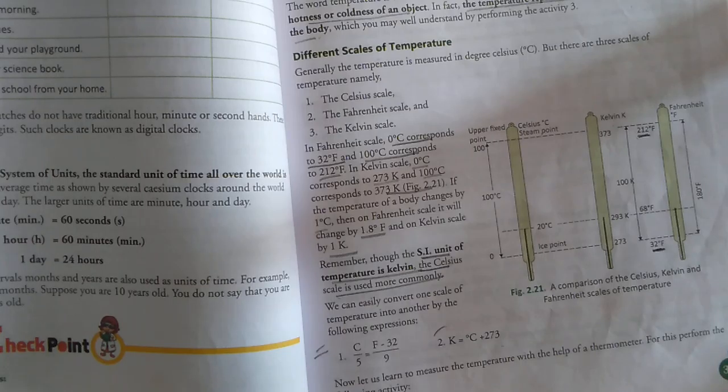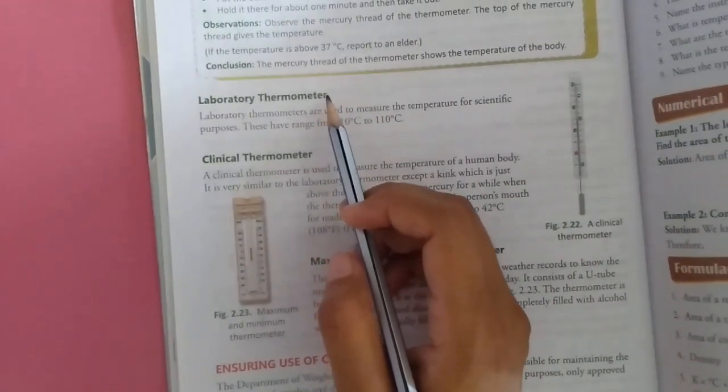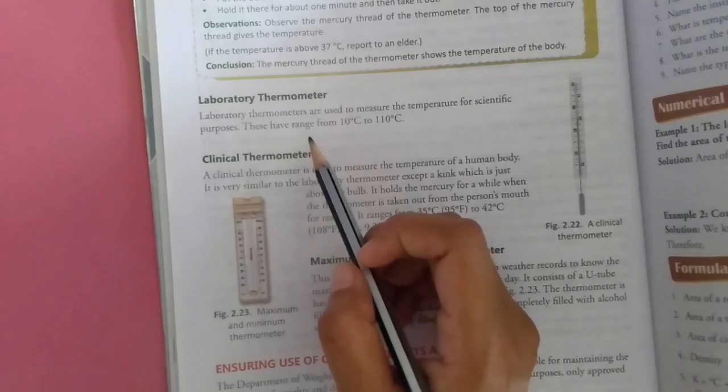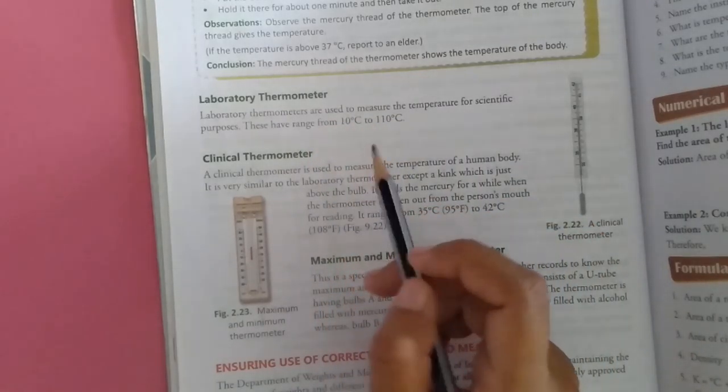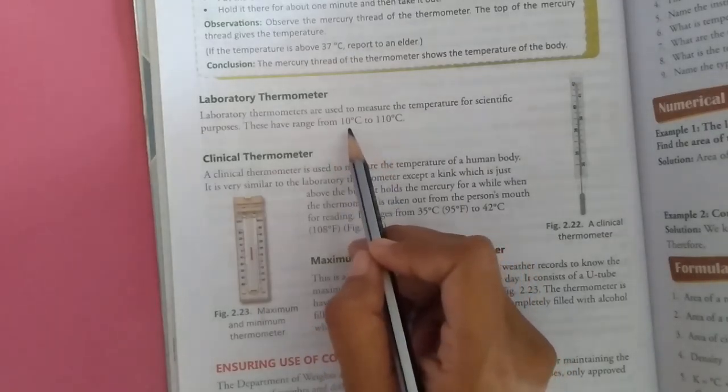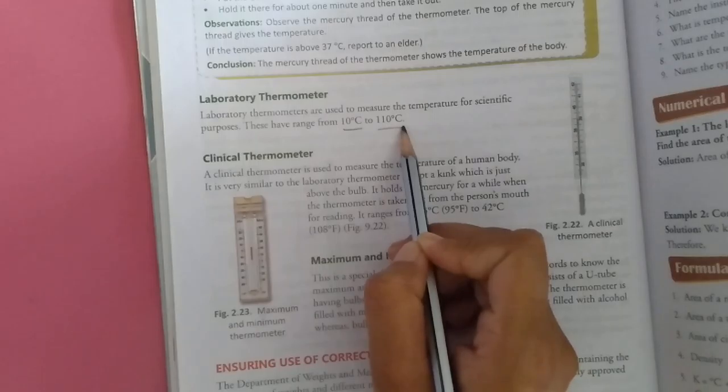Let us learn to measure the temperature with the help of a thermometer. First type of thermometer is laboratory thermometer. Laboratory thermometers are used to measure the temperature for scientific purposes. These have range from minus 10 degree Celsius to 110 degree Celsius.